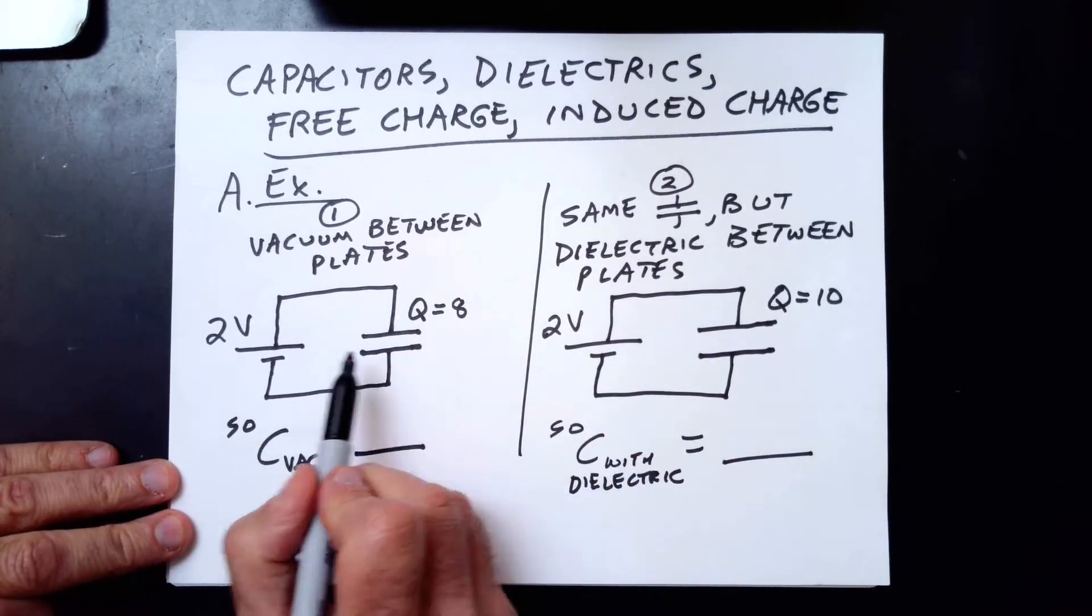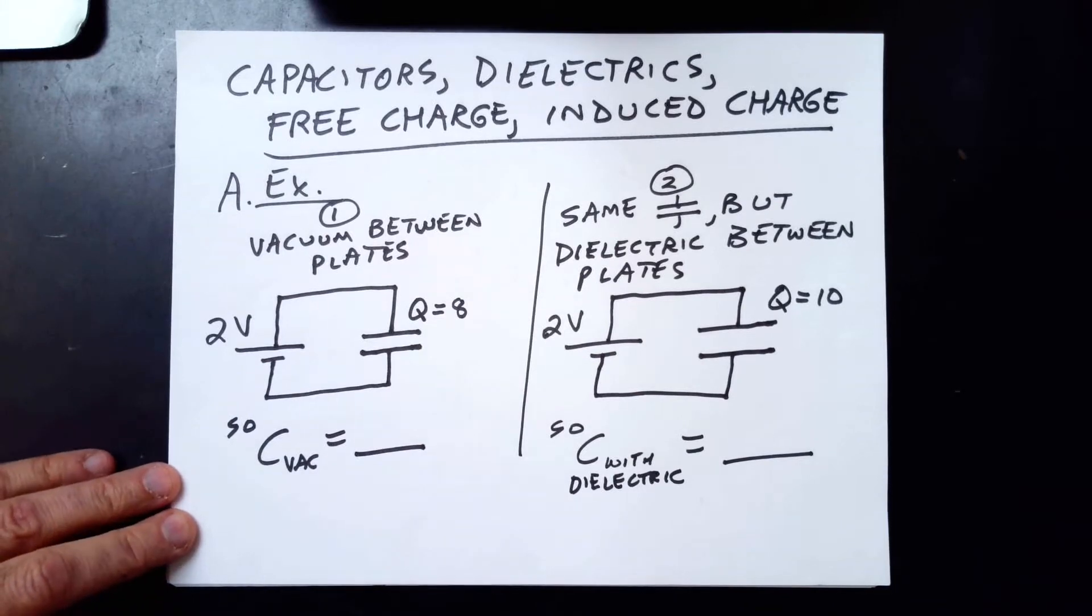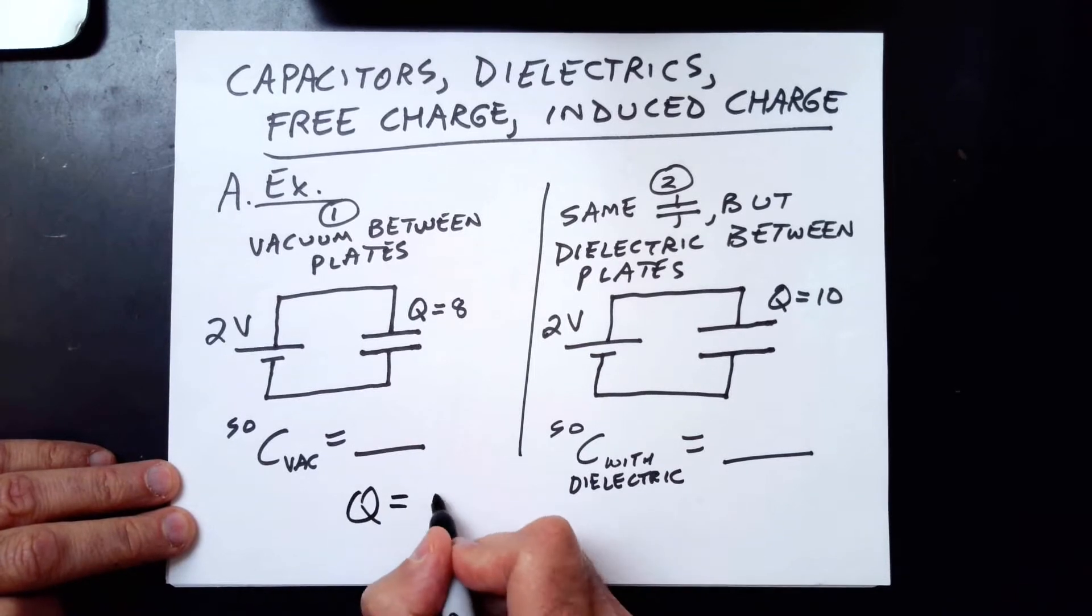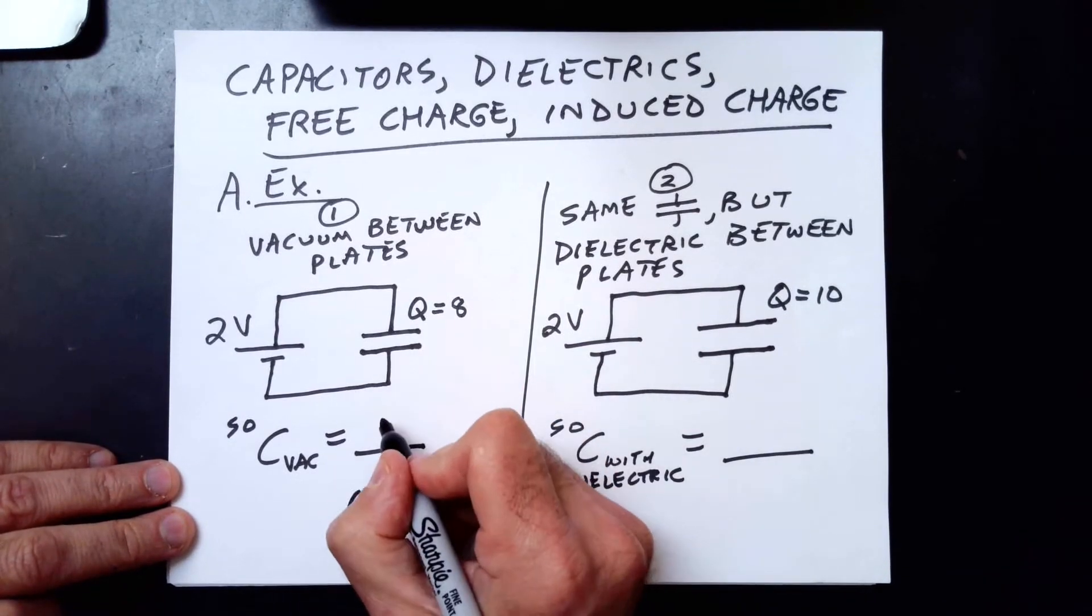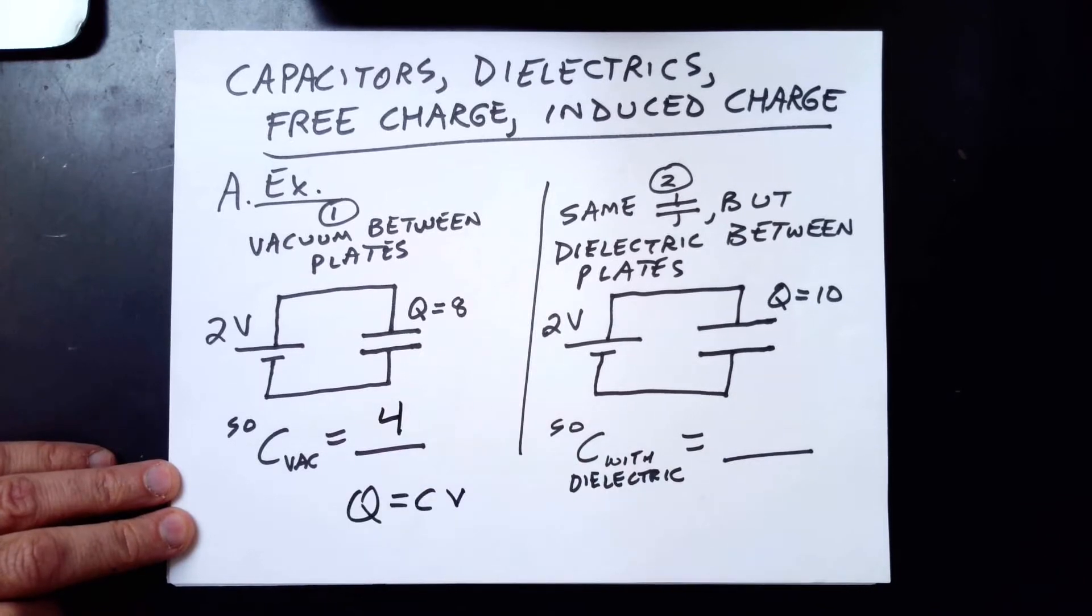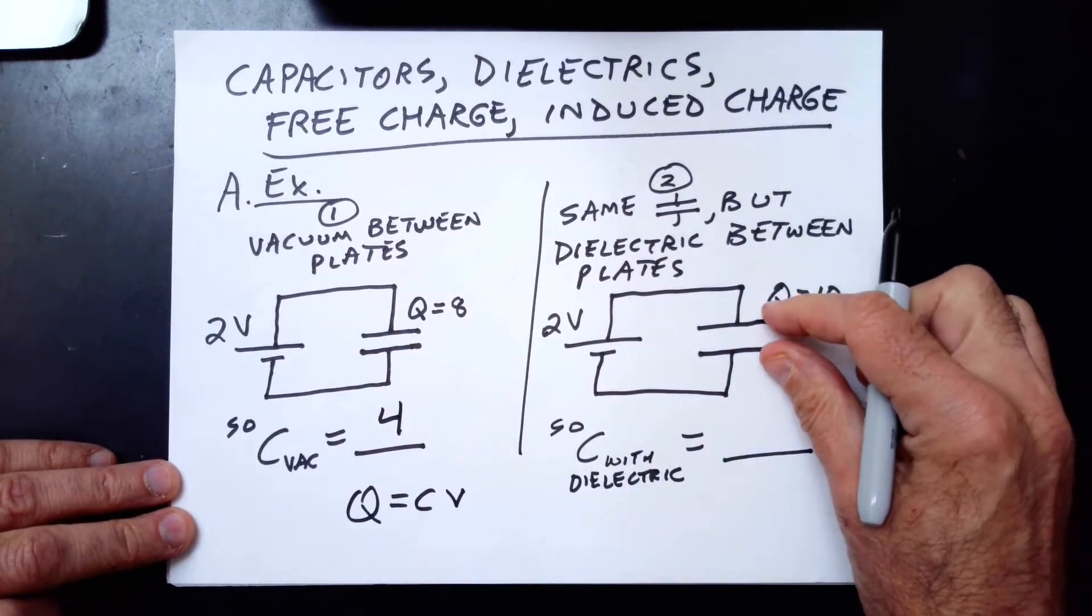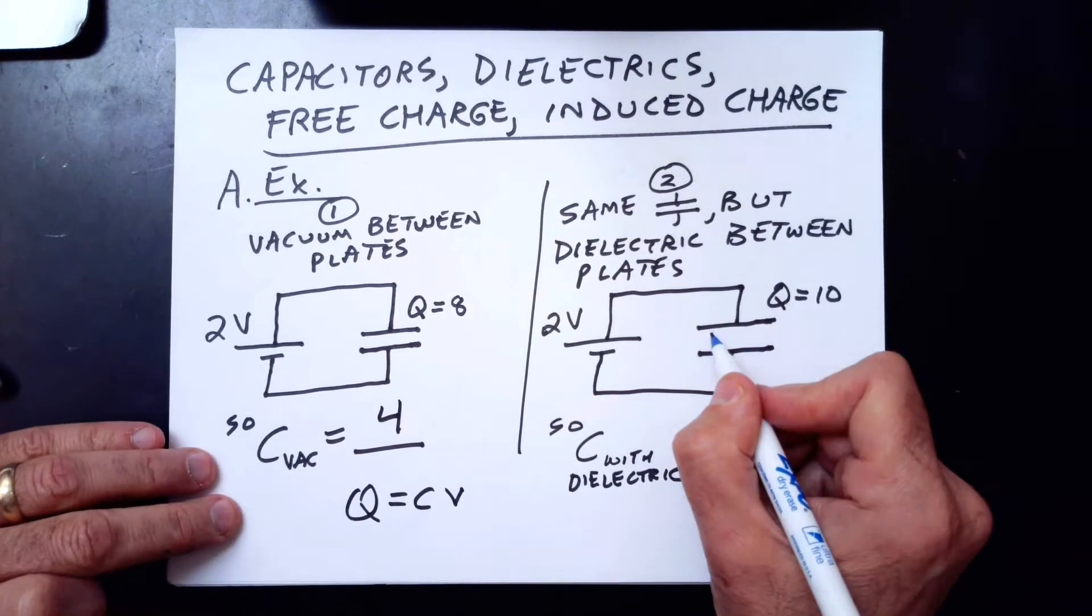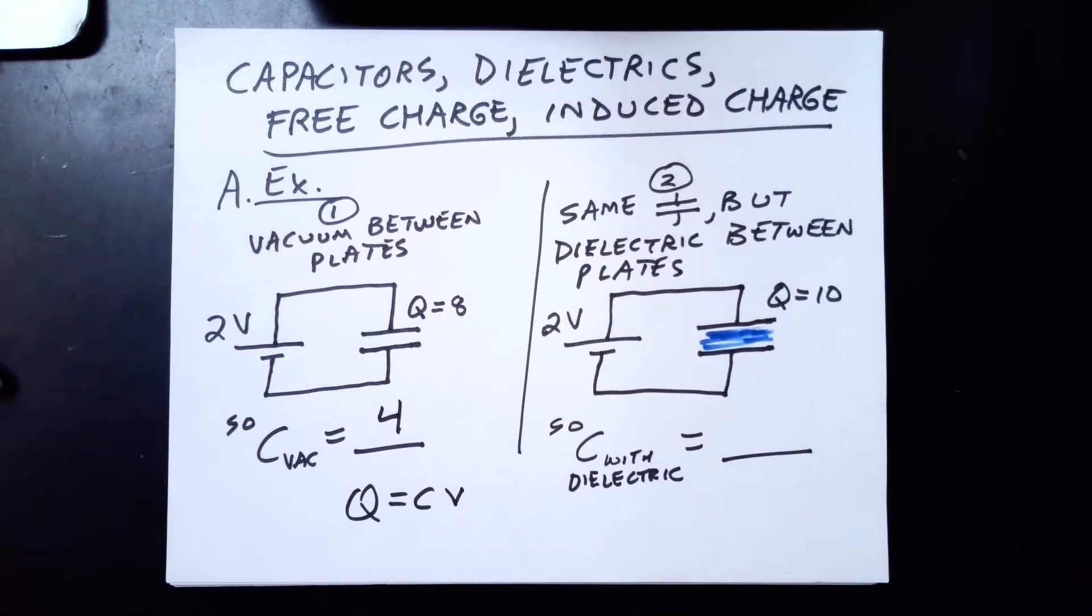We have a capacitor connected to a 2-volt battery. There's nothing between the plates, just a vacuum. And with these numbers that are given, since Q equals CV, the capacitance here is 4. Now we take exactly the same capacitor. We don't change anything about it. These may look a little further apart, but they're not supposed to be.